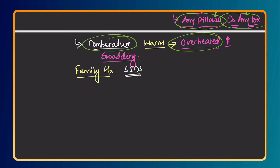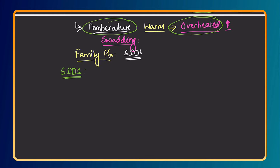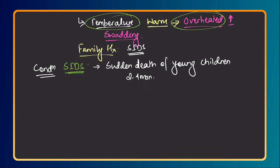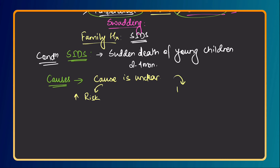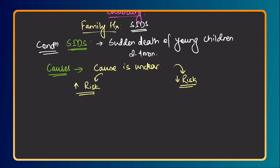When counselling, start by explaining what SIDS is: it is a condition where babies suddenly die. We do not know what the reason is, but there have been several factors which play either a protective role or can increase the risk. Make it clear to the mother that the cause is unclear — we do not know why it happens — however, there are factors which increase the risk and factors which are protective against sudden infant death syndrome.